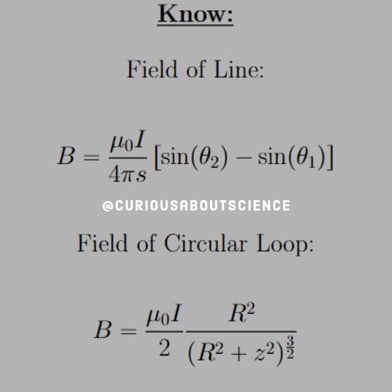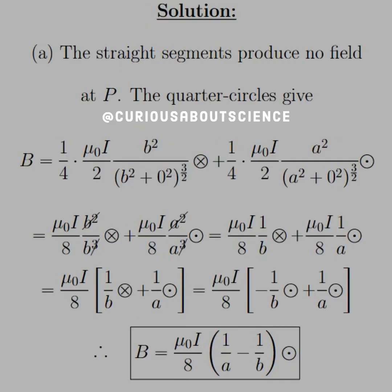All right, so what we should know is the field of a line and the field of a circular loop, same as last question. All right, so for part A, the two straight line segments produce no field there at P, but the quarter circles yield the field as follows.